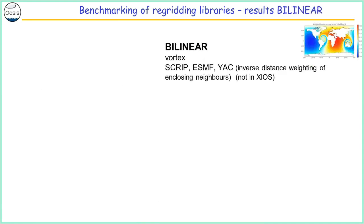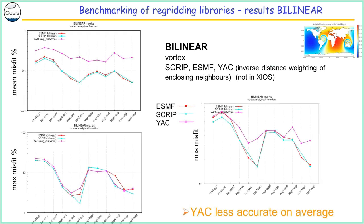For bilinear — second order re-gridding — the mean error, maximum error, and RMS are shown for three libraries. For YAC, it's not a true bilinear algorithm; it's an inverse distance weighting of the enclosing neighbor, so it's a bit different. On average, it's a little less precise, but does not give worse results for the maximum error. It still gives interesting information about the different implementations of second order non-conservative remapping.